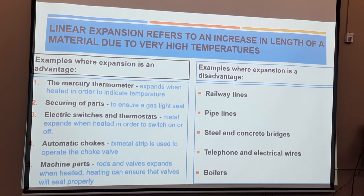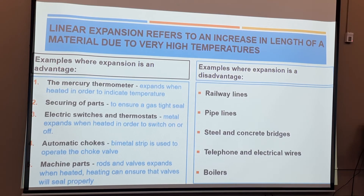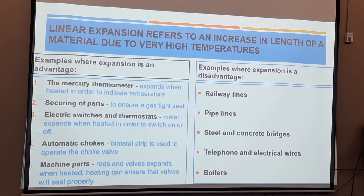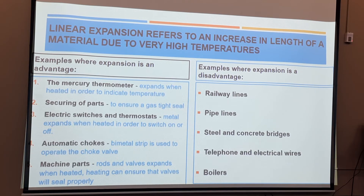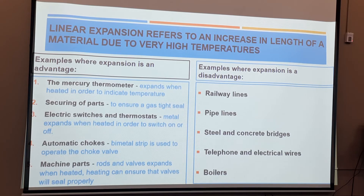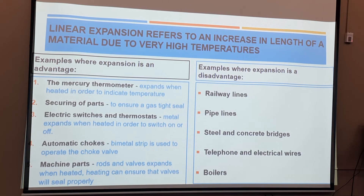For steel and concrete bridges, they don't weld everything. One side of the bridge is placed on rollers — although rollers are expensive, the bridge can roll back and forth as it expands and contracts. Telephone and electrical wires are not pulled straight; they always have a slight sag to allow for expansion during heat and contraction at night. For boilers and pipelines, one side is bolted and the other is welded so as to allow for expansion.